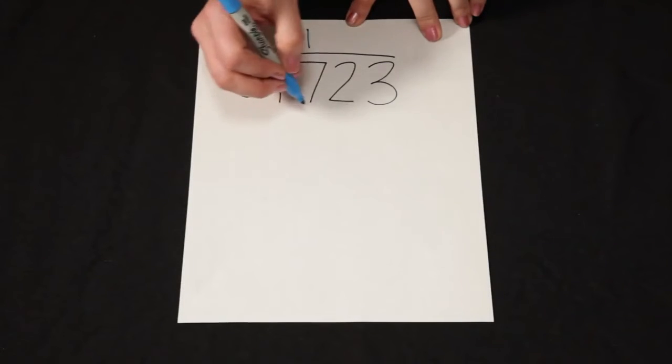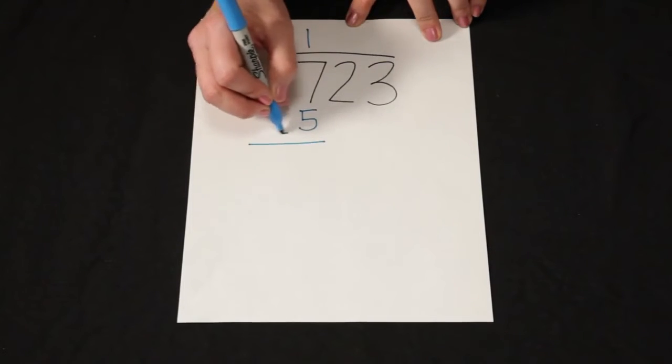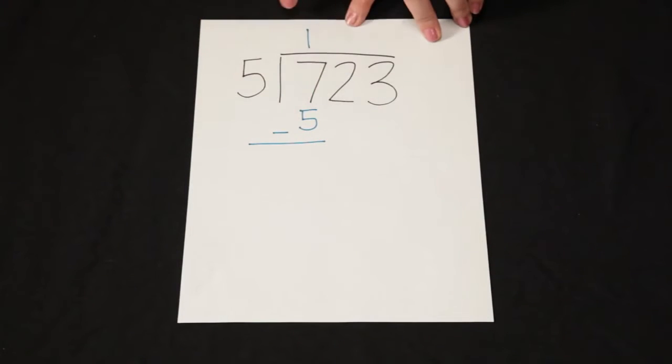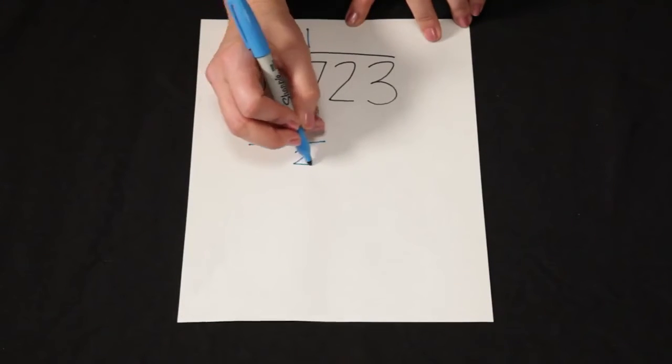5 times 1 is 5. And I want to subtract to figure out how many I have remaining. 7 minus 5 is 2.